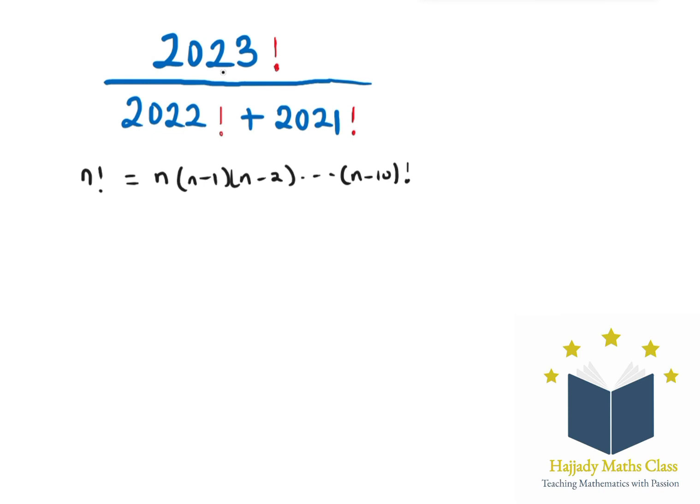So my 2023 factorial, writing it separately, can be the same thing as 2023 multiplied by 2023 minus 1 times 2023 minus 2 factorial. So the same thing with others. So rewriting the above question.